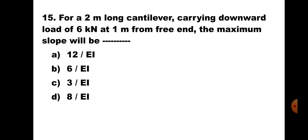Question number 15. For a 2m long cantilever carrying a downward load of 6kN at 1m from the free end, the maximum slope will be: A. 12/EI, B. 6/EI, C. 3/EI, D. 8/EI. In this cantilever, the point load is not acting at the free end but at another point — this is sub-case number 1. The slope under the load and slope at the free end will be the same. Hence, the maximum slope is WL²/2EI, giving 3/EI. The correct answer is C. 3/EI.